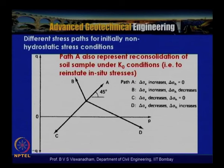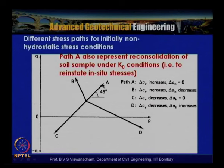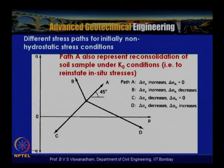Path A under non-hydrostatic initial stress conditions also represents the reconsolidation of a soil sample under K₀ conditions. Under K₀ conditions the stresses are not identical: for a normally consolidated soil, σh = K₀σv where K₀ ≈ 0.5.